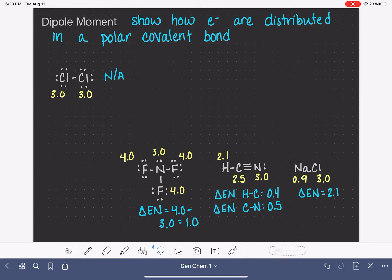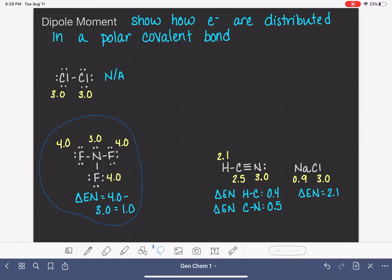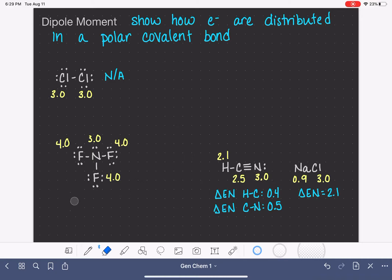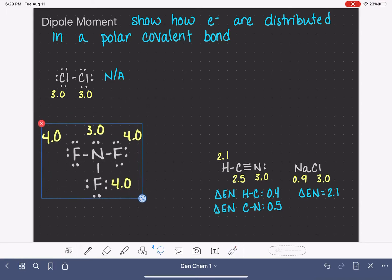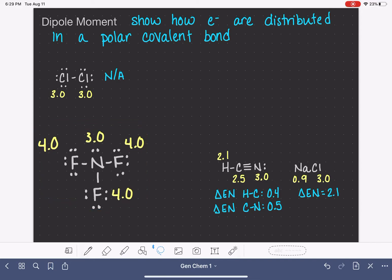When we have a molecule that has a polar bond like this molecule right here, we sometimes want to be able to show easily how the electrons are unevenly spread out between the two atoms in the polar bond.